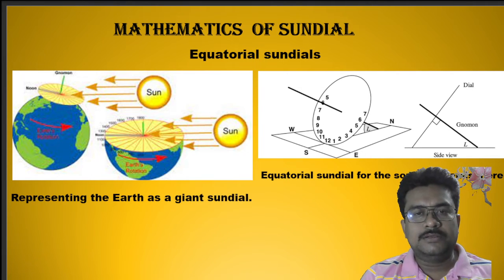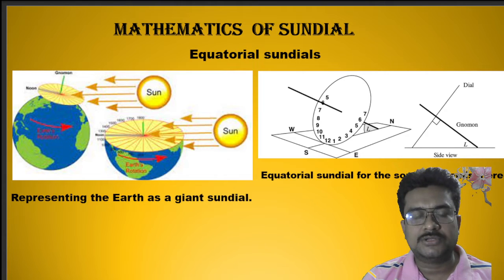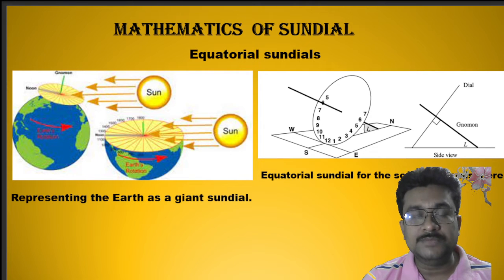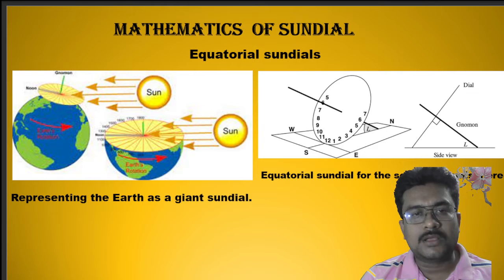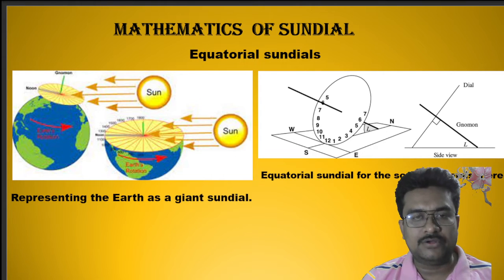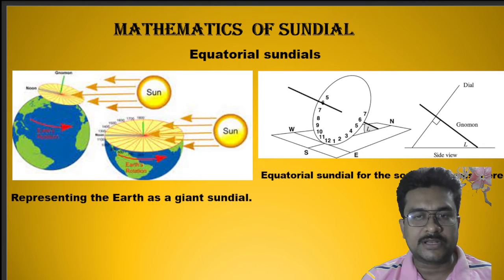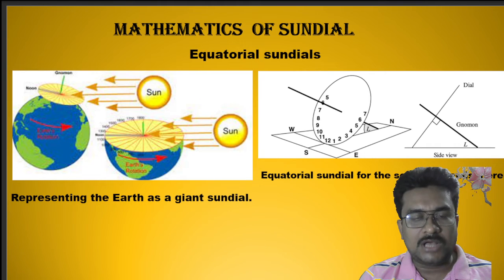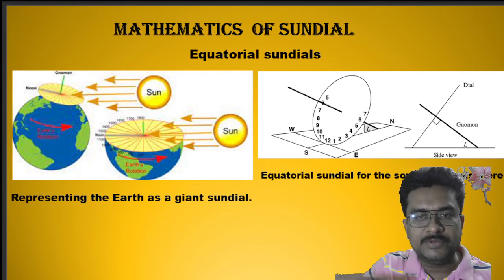Regarding the mathematics of the sundial, we can consider the Earth as a large sundial and its axis as a gnomon — a Greek word meaning 'one that knows.' Sunlight casts the shadow on a plane parallel to the equatorial plane, and we can divide this circle into 24 equally spaced lines called hour lines. The separation between each hour line is around 15 degrees.